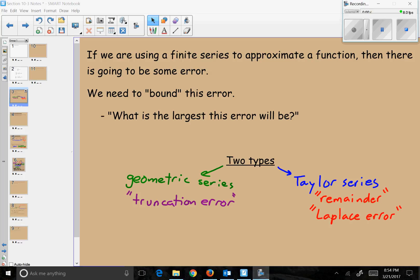The way we talk about error for a finite series is we want to bound it by saying that our error has to be smaller than a certain number. In other words, what is the largest this error will be? There are kind of two ways we look at this: one is with geometric series and the other is with Taylor series.